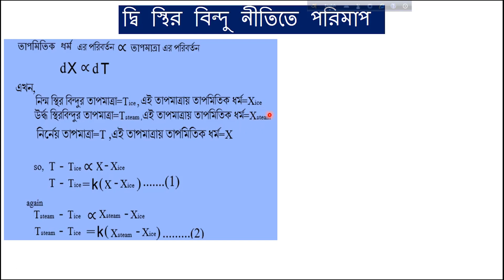So if you want to find the current temperature of an unknown object using the thermometer, you use the scale. From the thermometric property marking, you can easily read off the value on the scale — x_ice, x_steam — and find the unknown temperature.